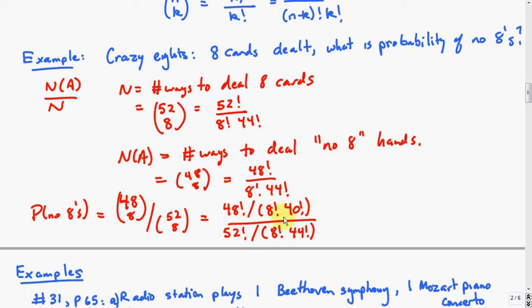We can simplify that a little bit. You'd be canceling a lot of things here. The 8 factorials would cancel obviously, and between the others you'd have some other things that cancel as well. When you simplify this out you get 48 times 47 down to 41 over 52 times 51 down to 45. That works out to be, after some more cancellation, 0.501.